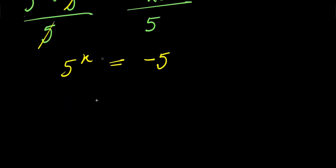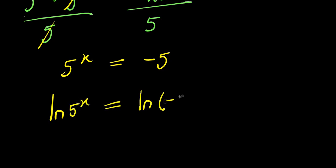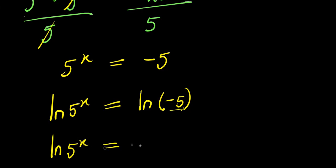So, to solve for x, I apply natural log. I have natural log of 5 power x equals natural log of negative 5. Now, where you have negative 5 here, you can express it as negative 1 times 5. So I have natural log of 5 power x equals natural log of negative 1 times 5.